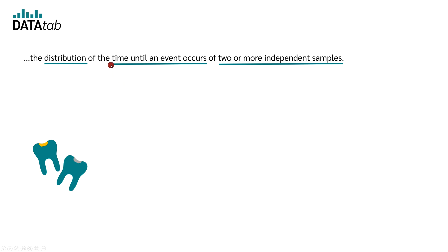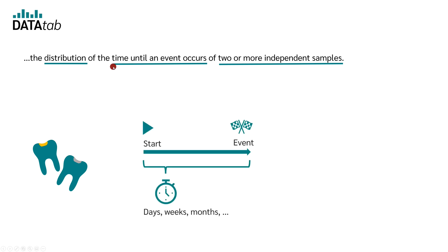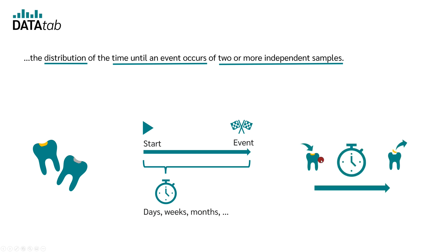In terms of what is there a difference? The log rank test analyzes whether there is a difference in the time until an event occurs. The log rank test looks at the variable that has a start time and when a certain event occurs, an end time. The time between the start time and the event is considered. The time can be measured in days, weeks, or months. In our example, we might be interested in whether the material has an influence on the time after which the filling breaks out again. So we have a start point — the moment when the filling is inserted — and an end point or event, which is the time when the filling breaks out again.